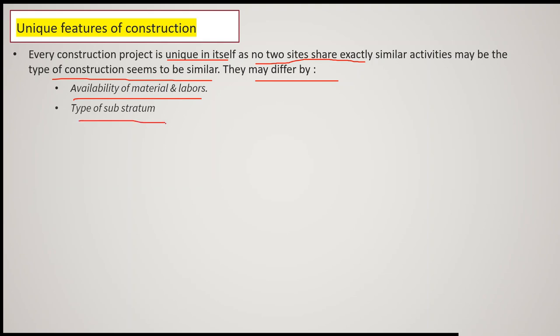The type of substratum — that means the situation at the ground level — will definitely vary from one project to another. From geotechnical engineering you understand that soil conditions vary from place to place. Even within a single project site, the properties of subsoil may differ, and depending upon the type of soil, its bearing capacity or other properties, you have to decide the type of foundation. So no two projects are equally similar.